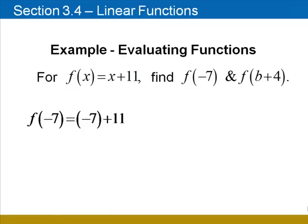For f(-7), we replace x by -7. Now we'll add -7 + 11, which equals 4. So we see that f(-7) = 4. The input of -7 produces an output of 4.